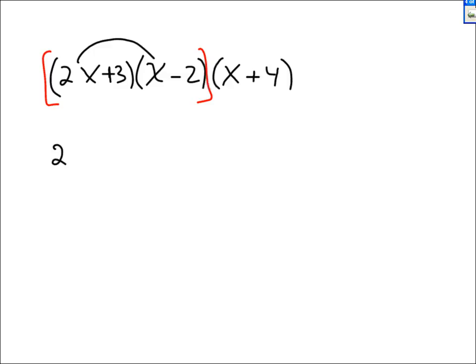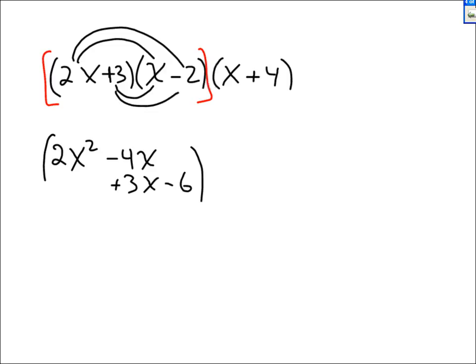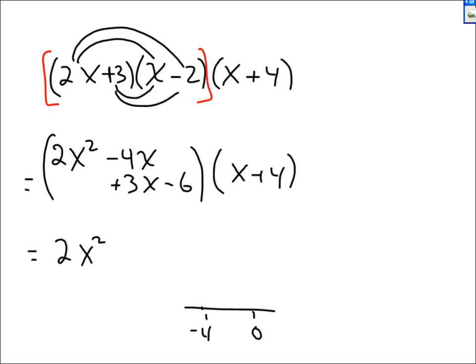So: 2x times x — x times x is x squared — gives 2x squared. 2x times negative 2 is negative 4x. Then plus 3x, and minus 6. Combining: negative 4x plus 3x is negative x. So the first multiplication gives 2x squared minus x minus 6, and this answer gets multiplied by x plus 4.